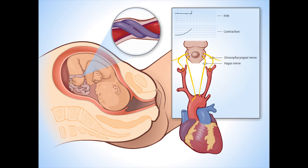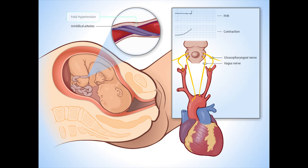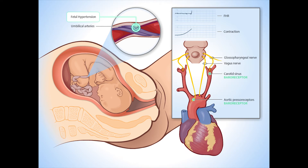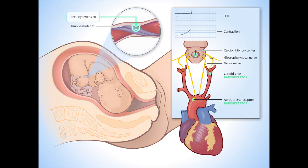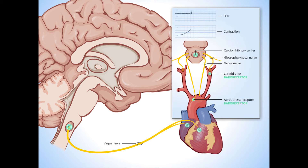As the uterine contraction increases in strength, the umbilical arteries will also collapse, leading to hypertension. Fetal hypertension triggers the baroreceptors to send signals to the cardio-inhibitory center. Stimulation of the vagus nerve causes the fetal heart rate to abruptly decelerate to the nadir. This is called an uncomplicated variable deceleration.